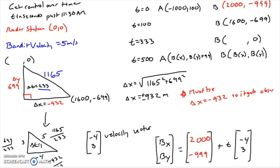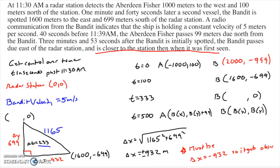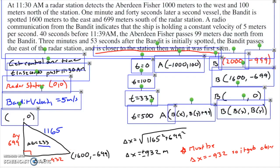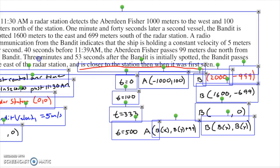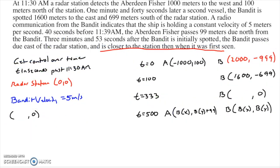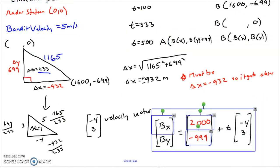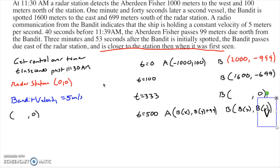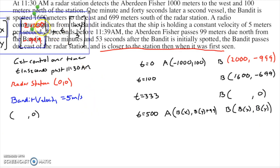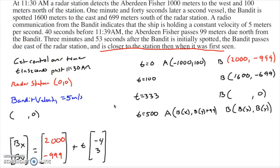Now we'll do the same thing for the Aberdeen Fisher. I'll carry over the positions, assumptions, and the bandit's vector equation. I knew the Fisher's position relative to the bandit at t equals 500 — the Fisher is directly above the bandit. So I need to find where the bandit is at t equals 500. Plugging t equals 500 into the bandit's equation gives the bandit's position as 0 comma 501.